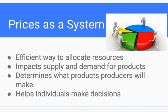Prices as a system: it's an efficient way to allocate resources. It impacts supply and demand for products, determines what products producers will make, and helps individuals make decisions. If I know what the price is, I know what I need to make, whether it's a good deal compared to competition, and then I make an educated decision. When looking at purchasing a car, for example, what would you buy?